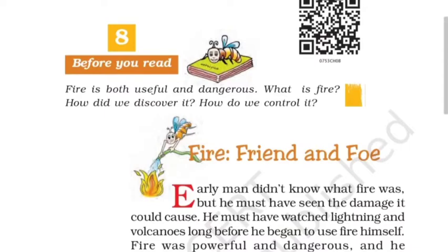So how is fire a friend? Because it is useful. How is it a foe — that is, an enemy? Because it is dangerous. So fire being our friend means it is useful to us, and fire being our foe means it is dangerous.